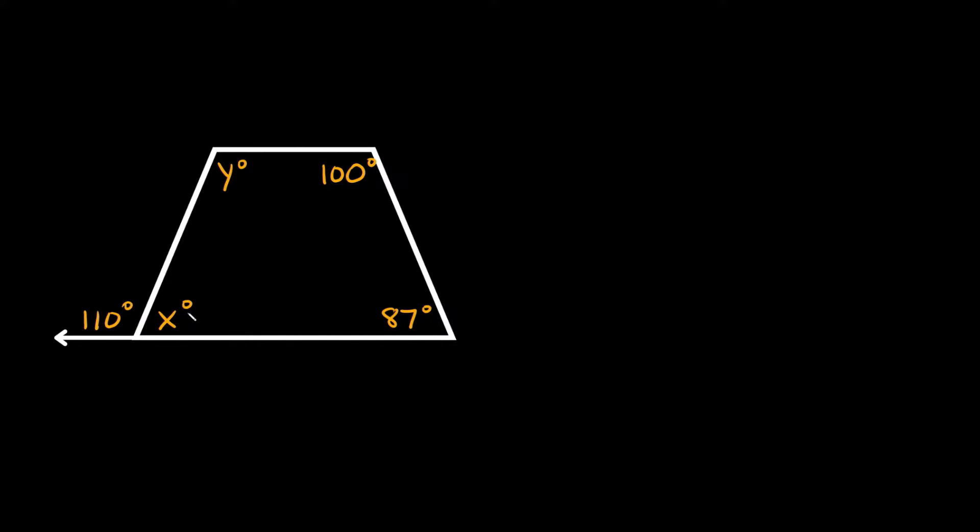So as you can see this is a supplementary angle with this 110 degrees. So both of these, since they're along a straight line intersected by another line right here, that means they're equal to 180 degrees. So if this is 110 that means x must be equal to 70 degrees. So we found an easy one right off the bat.